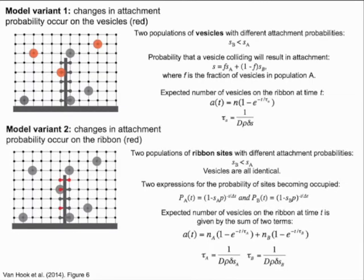In the second variant of the model, we assume that changes in attachment probability result from changes at vesicle attachment sites on the ribbon. As a result, there are two populations of ribbon sites with different attachment probabilities, and all vesicles are identical. This gives us two expressions for the probability that a given vesicle attachment site becomes occupied. In this scenario, the number of vesicles on the ribbon at a given time is governed by two time constants, and because the changes in attachment probability occur at individual sites on the ribbon, inhibition of calcium and calmodulin is expected to lead to a change in the amplitudes of each component of this function.